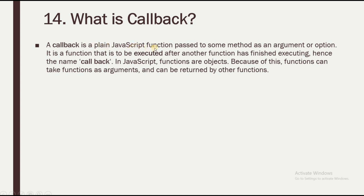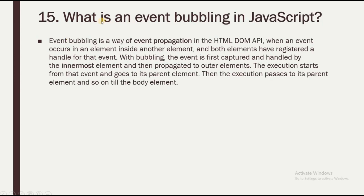Question 14: What is a callback? A callback is a plain JavaScript function passed to some method as an argument or option. It is a function that is to be executed after another function has finished executing — hence the name 'callback'. In JavaScript, functions are objects, so functions can take other functions as arguments and can be returned by other functions.